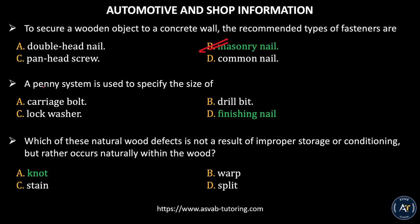Next question: a penny system is used to specify the size of — Option A, carriage bolt. Option B, drill bit. Option C, lock washer. Option D, finishing nail. The correct answer is Option D, finishing nail.